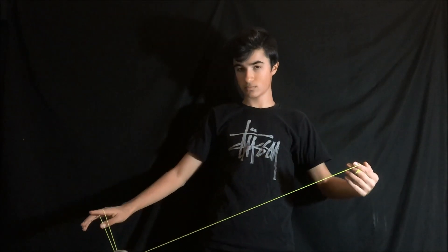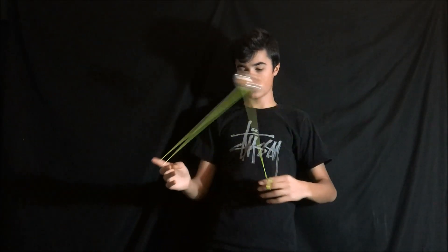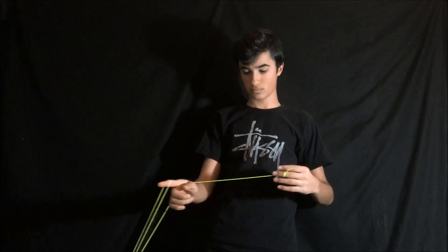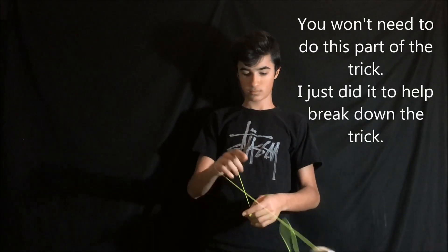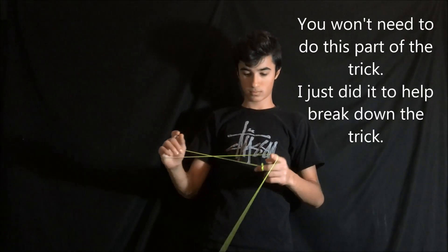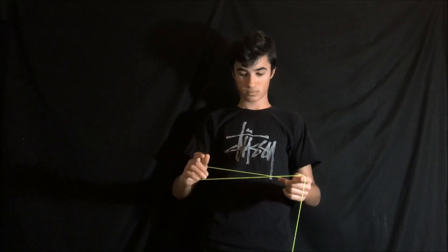First throw a trapeze, then swing the yo-yo over and around your non-dominant hand. Now swing the yo-yo over your dominant pointer finger while hooking your thumb into the string.